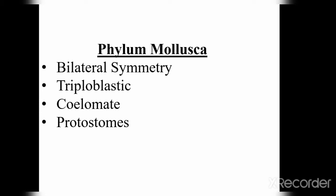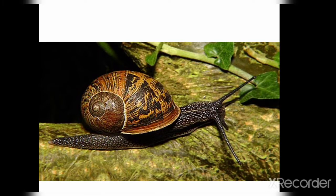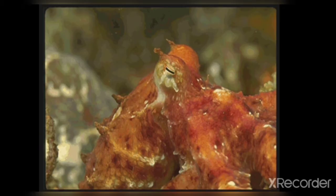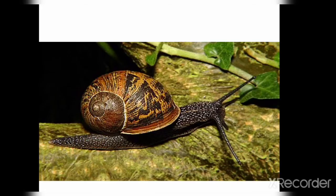Examples of mollusca include the snail and the octopus. Regarding their habitat, mollusca can be found in freshwater, in marine environments, and also in the terrestrial environment — that is, on land. So they occupy a wide range of habitats.